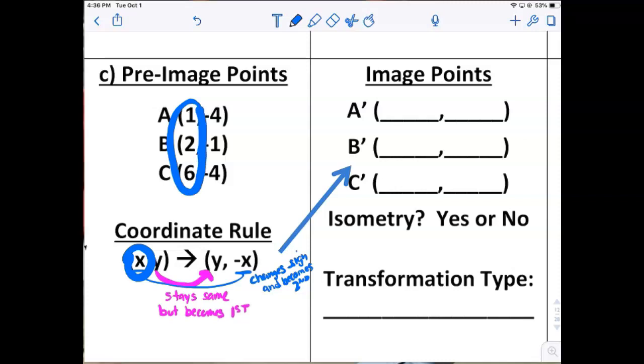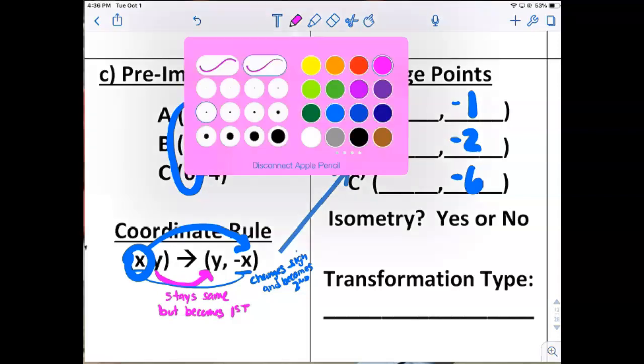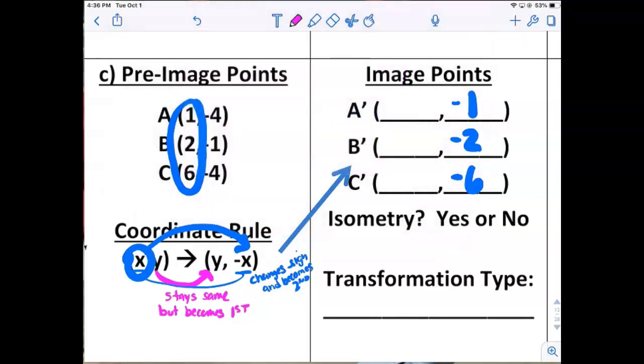All of the x coordinates move to become the y, the second part, but they also change signs. So they move to the y but also change signs. The original y becomes the new x and doesn't change at all.